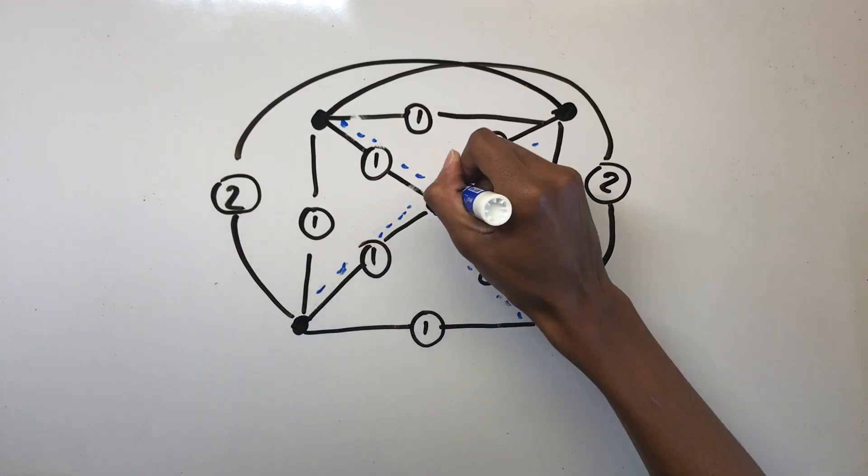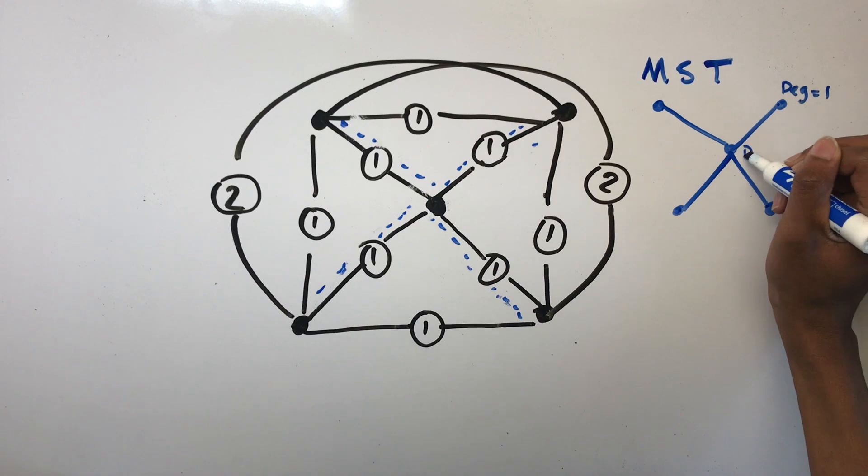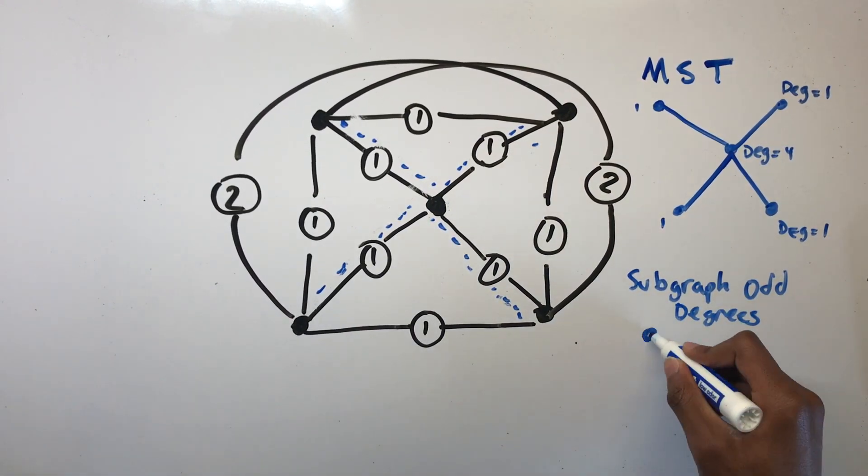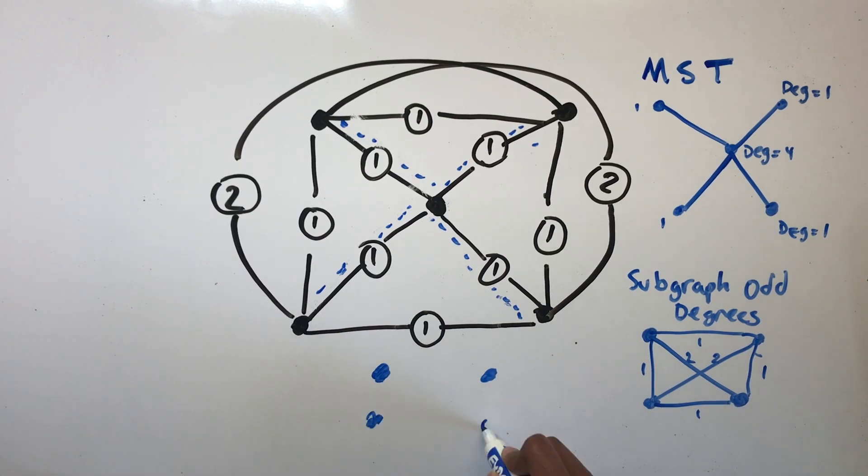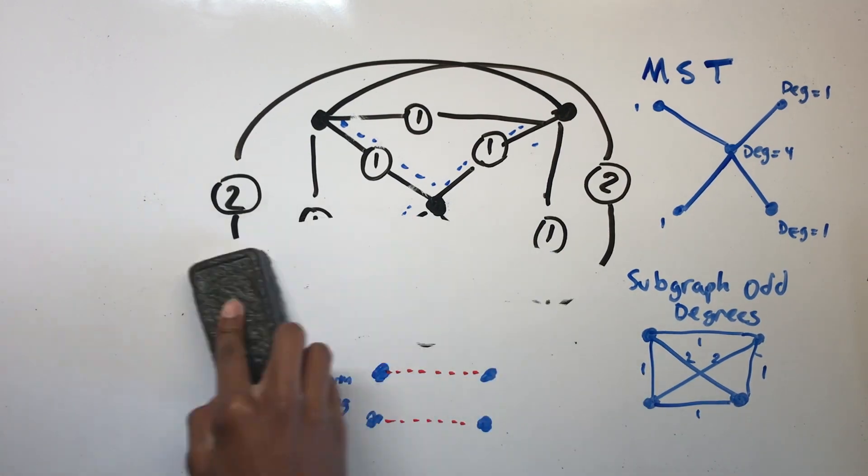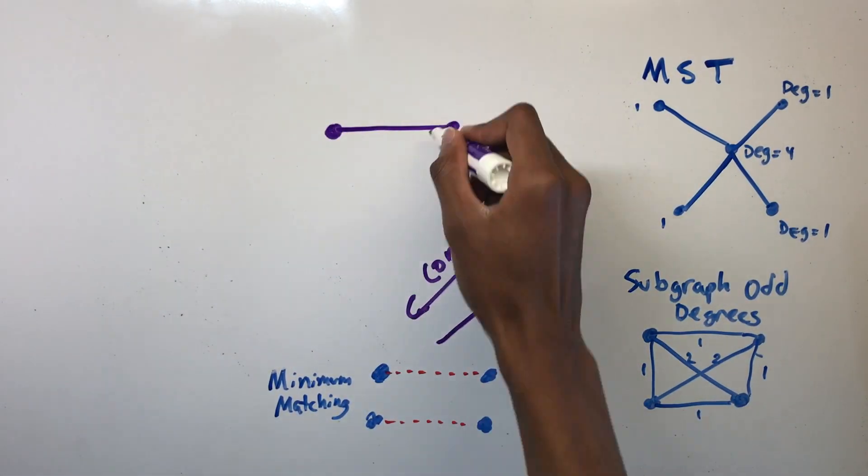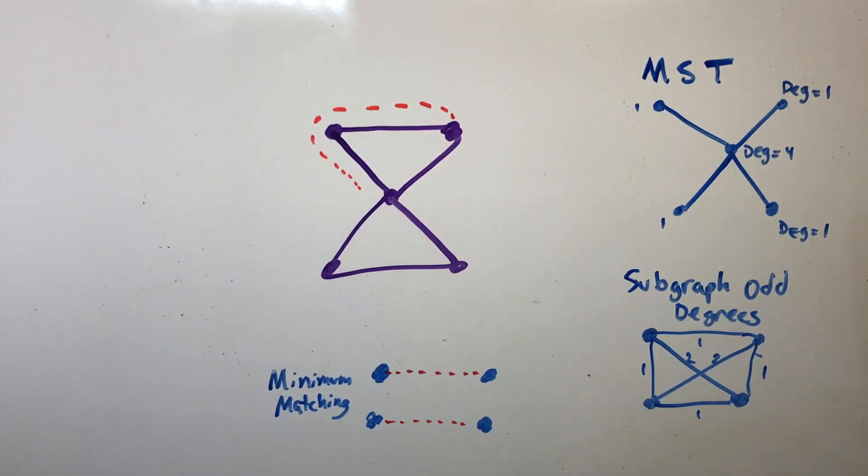So how does this algorithm work? Here's how it performs. Consider this graph. The first thing that we are going to do is calculate the minimum spanning tree. Next, you calculate the vertices with an odd degree and create a subgraph using only the odd vertices and then construct a minimum weight perfect matching for the subgraph. A perfect matching is where every vertex is connected by one edge. After that, you combine the perfect matching with the minimum spanning tree and now you have a graph where every vertex has an even degree. You can now calculate the Eulerian tour since every vertex has an even degree.